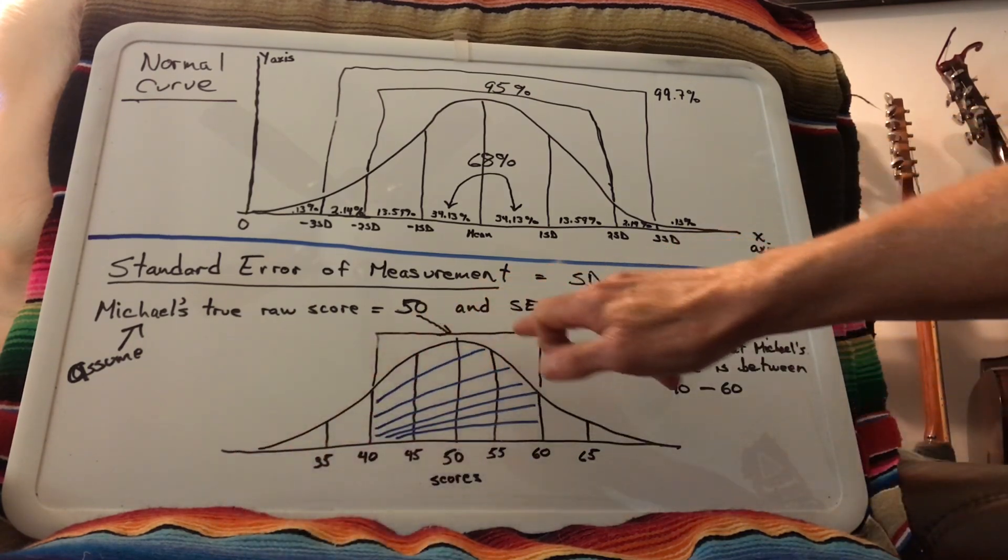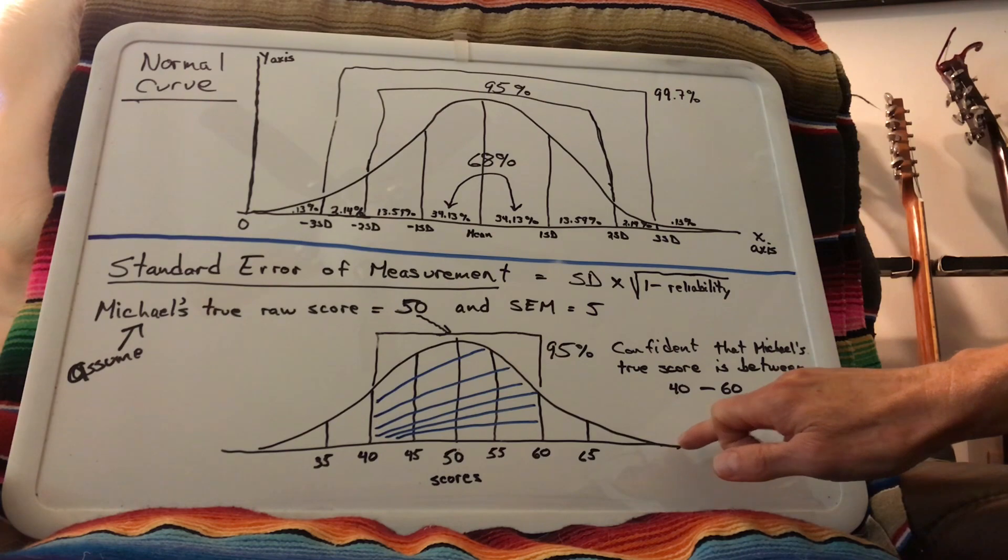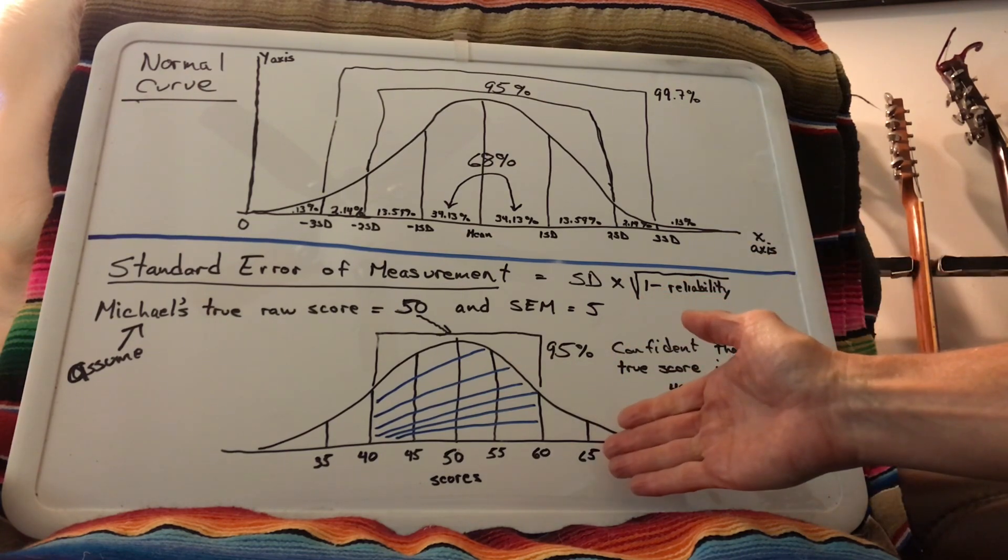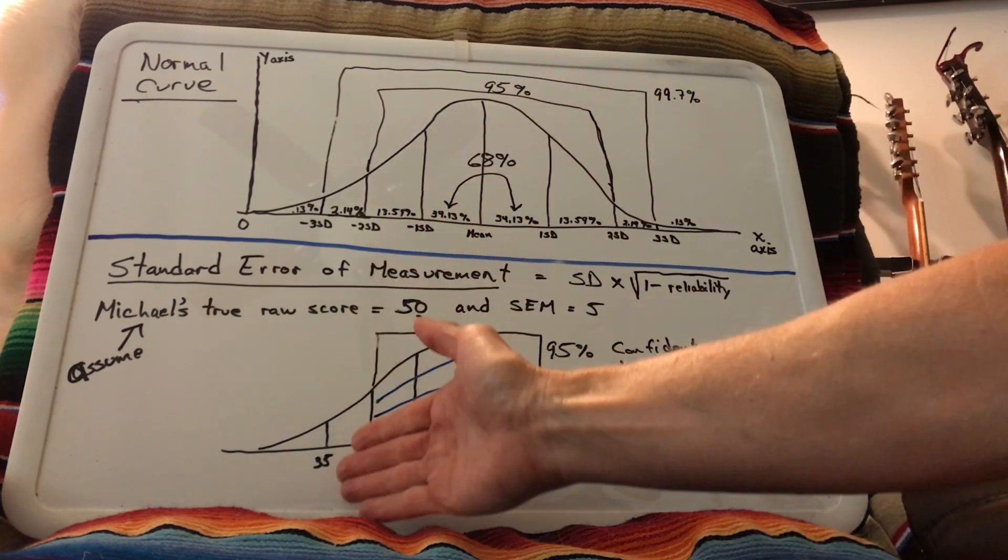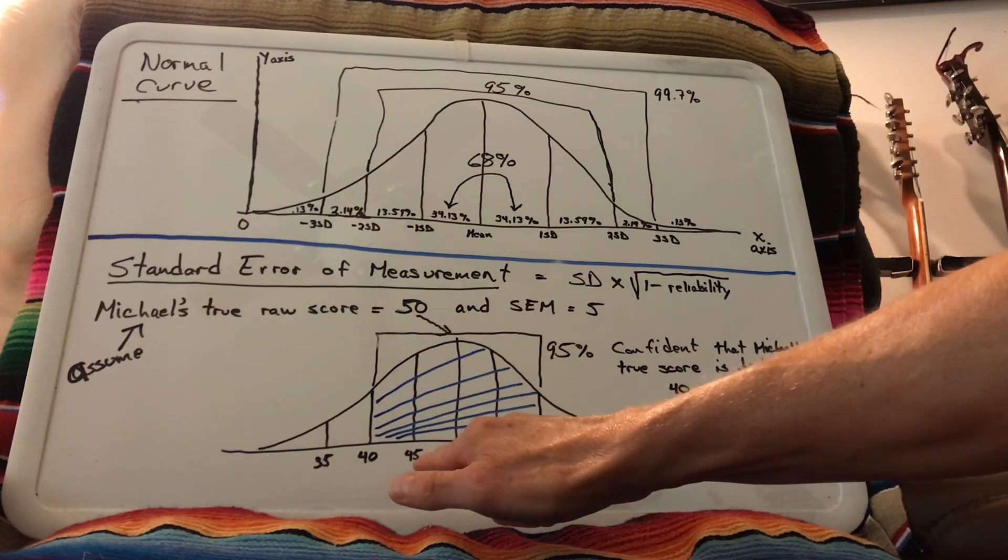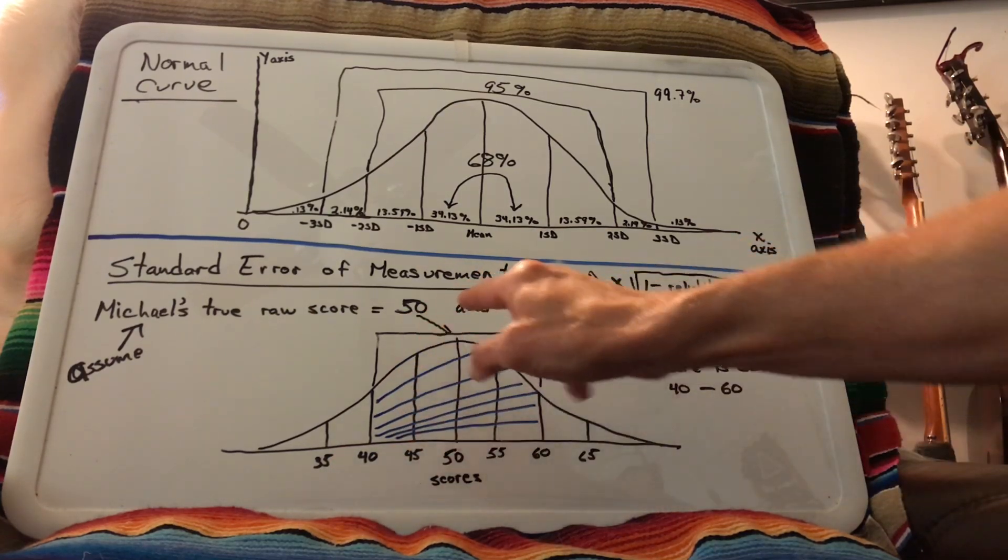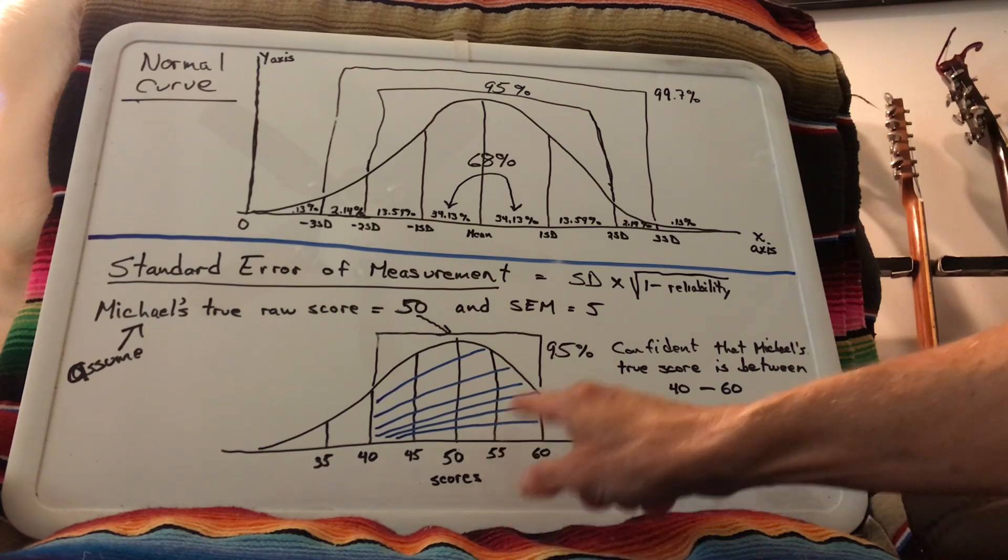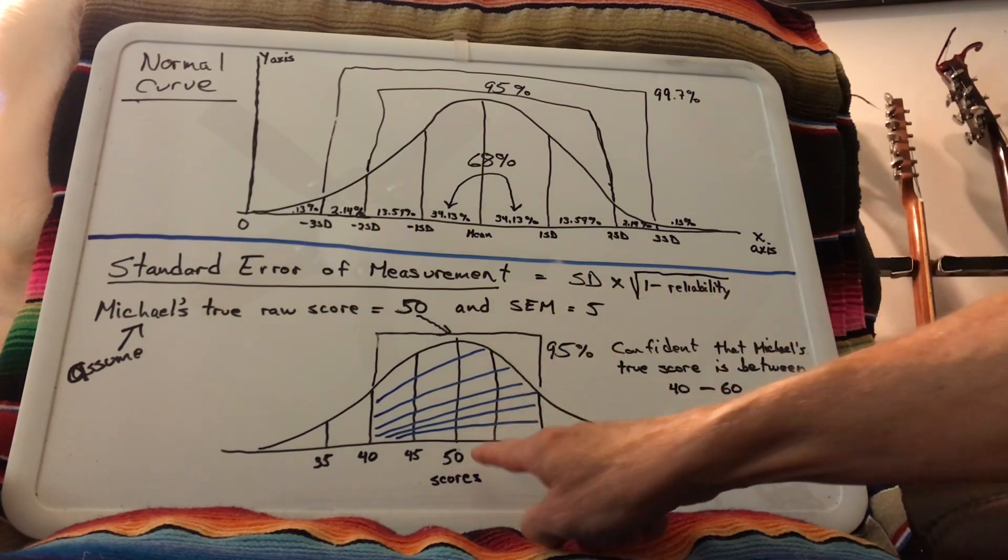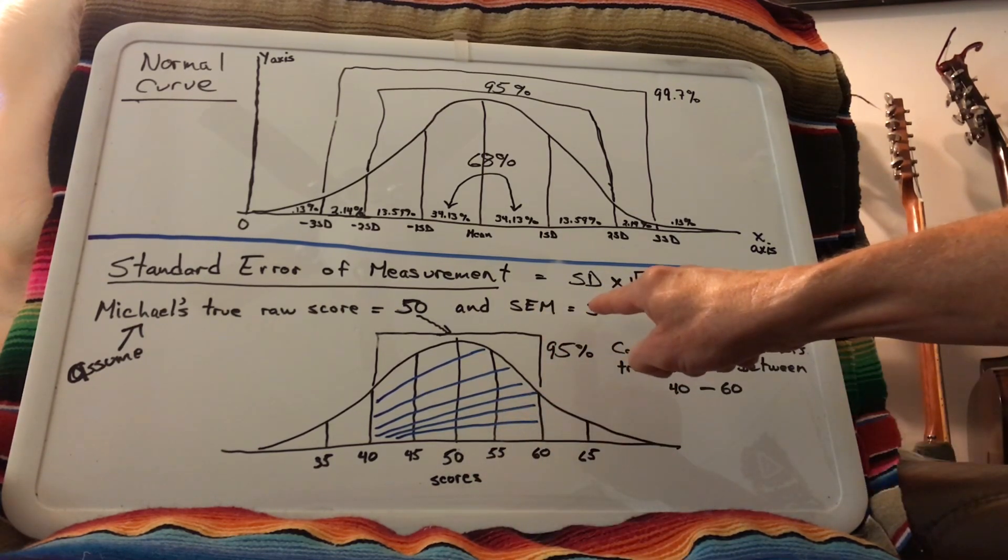Meaning sometimes he may score high, sometimes he may score low, but that 68% of the time he's going to be plus or minus one SEM from the mean. We've calculated SEM to be five.